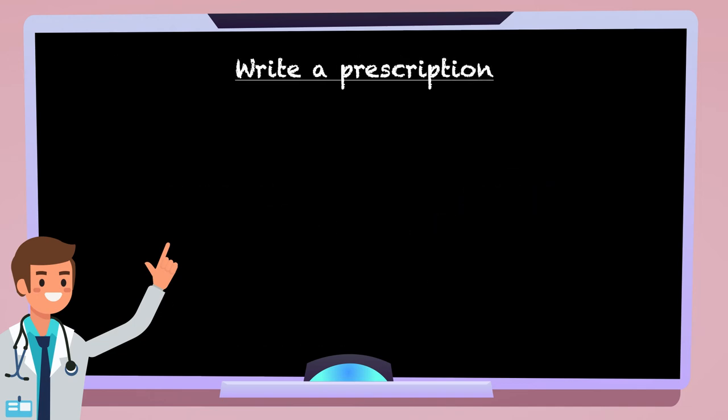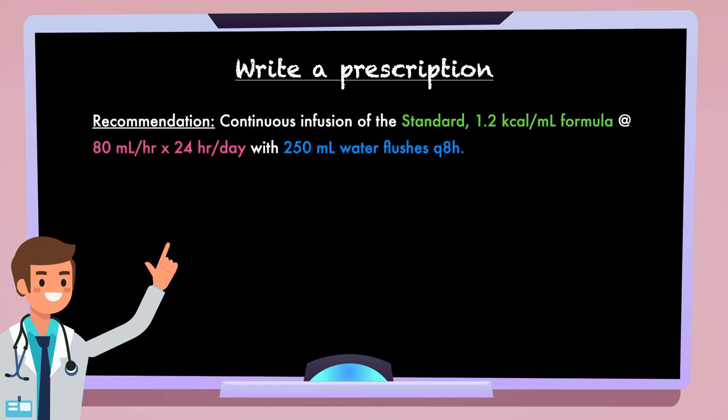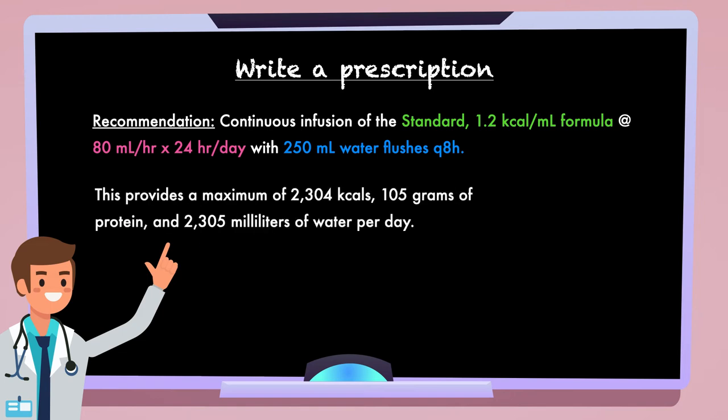It's been quite a journey, but we are ready to write a prescription. We recommend a continuous infusion of the standard 1.2 calorie formula at 80 mls per hour times 24 hours per day with 250 milliliters of water flushes Q8H. This provides a maximum of 2304 calories, 105 grams of protein, and 2305 milliliters of water per day. Our prescription is an appropriate starting point for the infusion and should be followed by monitoring of weight status, fluid status, and tolerance, and adjusted as needed.